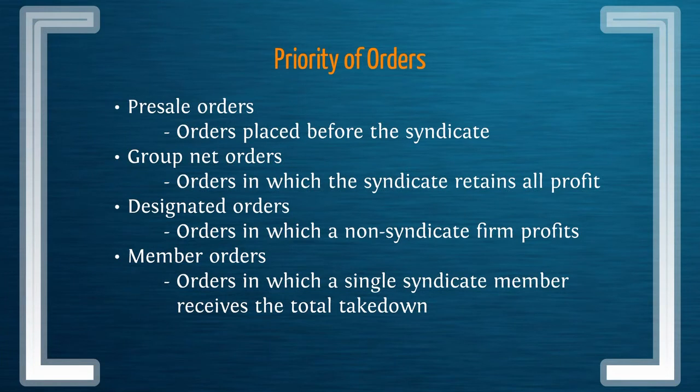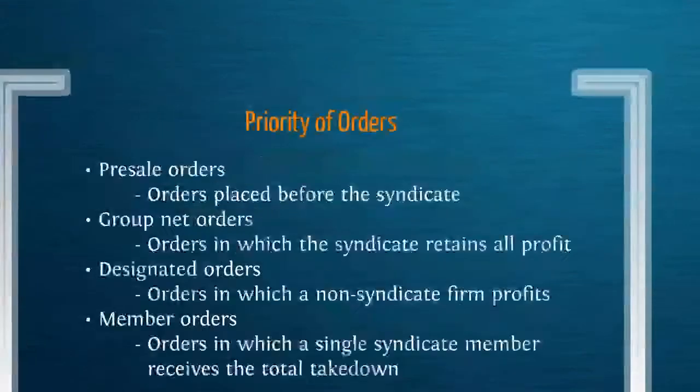There are different types of orders with new issuance. We have pre-sale orders, which are orders placed before the syndicate has access to them. We have group net orders, designated orders which are non-syndicate orders, and member orders in which one member takes the complete takedown on those particular bonds.